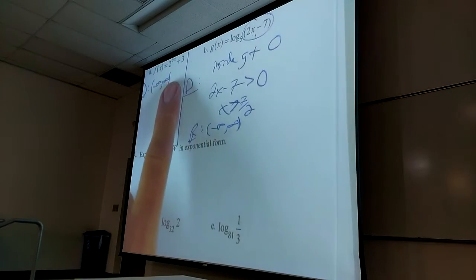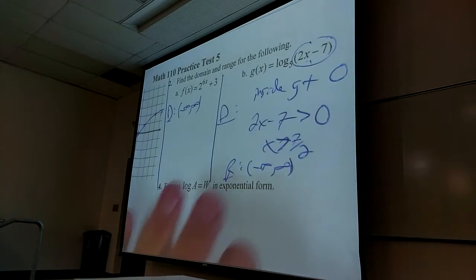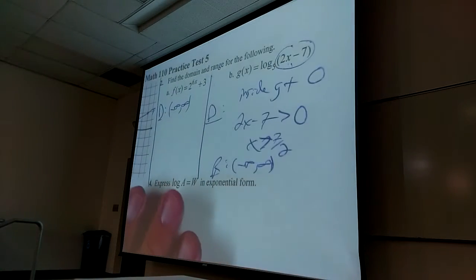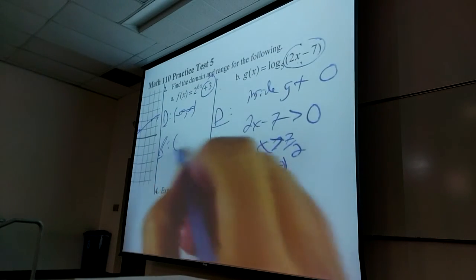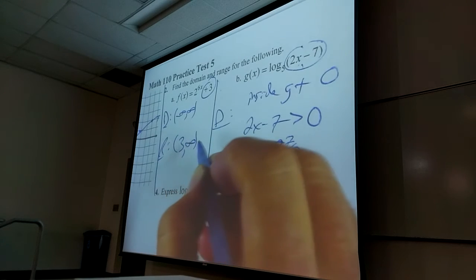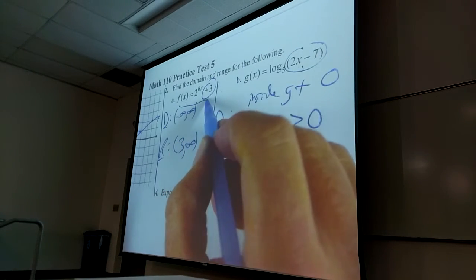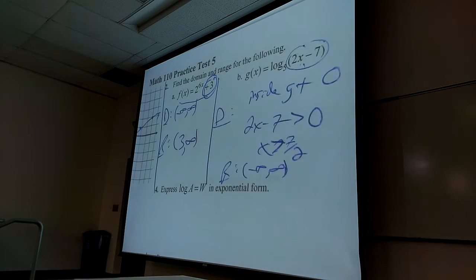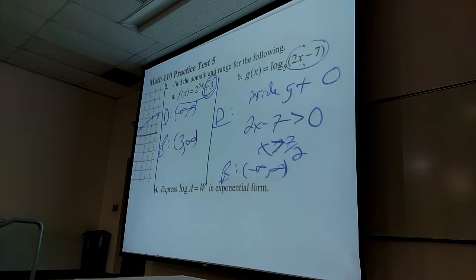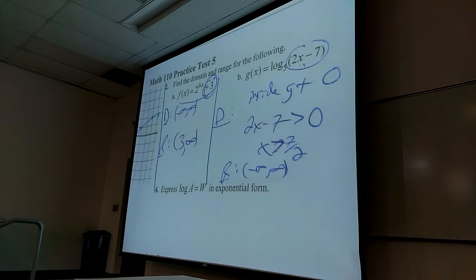Where is the asymptote for this function? It goes up three. So the range starts at three now. Everything about this function goes up three. The asymptote is normally at zero, but now it's going to be at three. So the range is now going to be three to infinity, because I just lifted the whole thing up three.